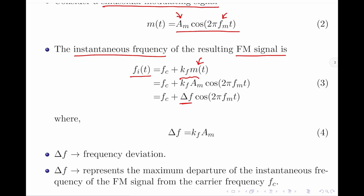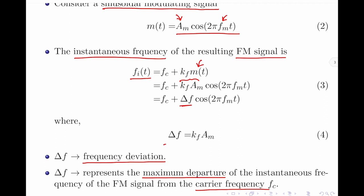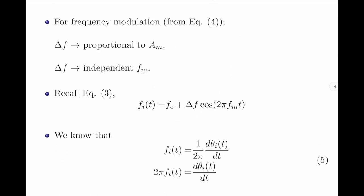Where delta f is called the frequency deviation, and it represents the maximum departure of the instantaneous frequency fi(t) from the carrier frequency fc. It should be noted that frequency deviation is a very important parameter in the design of frequency modulation systems. Equation 4 is given by delta f equals kf, the sensitivity constant, multiplied by am, the amplitude of the sinusoidal modulating signal. For frequency modulation, the frequency deviation delta f is proportional to am. Also, the frequency deviation delta f is independent of fm, which is the frequency of the input sinusoidal modulating signal.